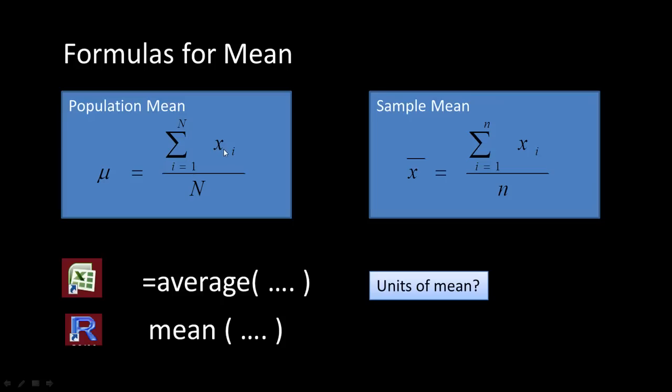For example, if you're talking about salary of households, x_i would be the salary of the i-th household, summed from 1 to the total number of households, then divided by N. This is calculating the average — adding up all values and dividing by N — but for the entire population.